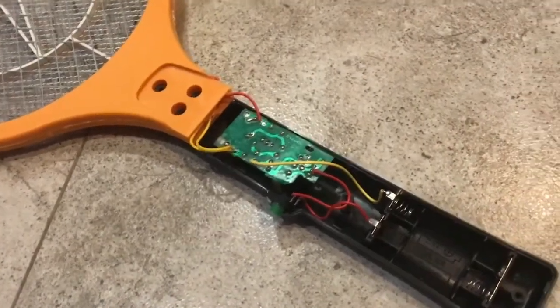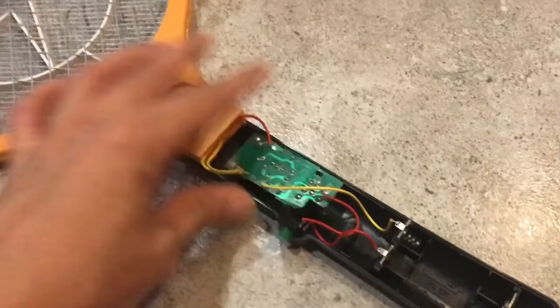For the DIY Tesla coil, the main ingredient is the high voltage circuit from a fly zapper like this one here.